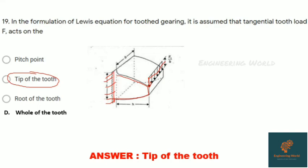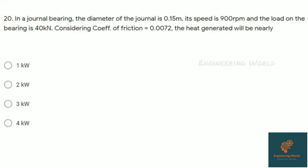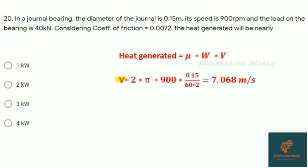Question twenty: In a journal bearing, the diameter of journal is 0.15 meter, speed is 900 rpm, and load on bearing is 40 kN. Consider coefficient of friction 0.0072. Heat generated will be... Heat generated is given by μ × W × V. V is velocity in meter per second, that is V equals R × ω, where ω is 2πN/60.